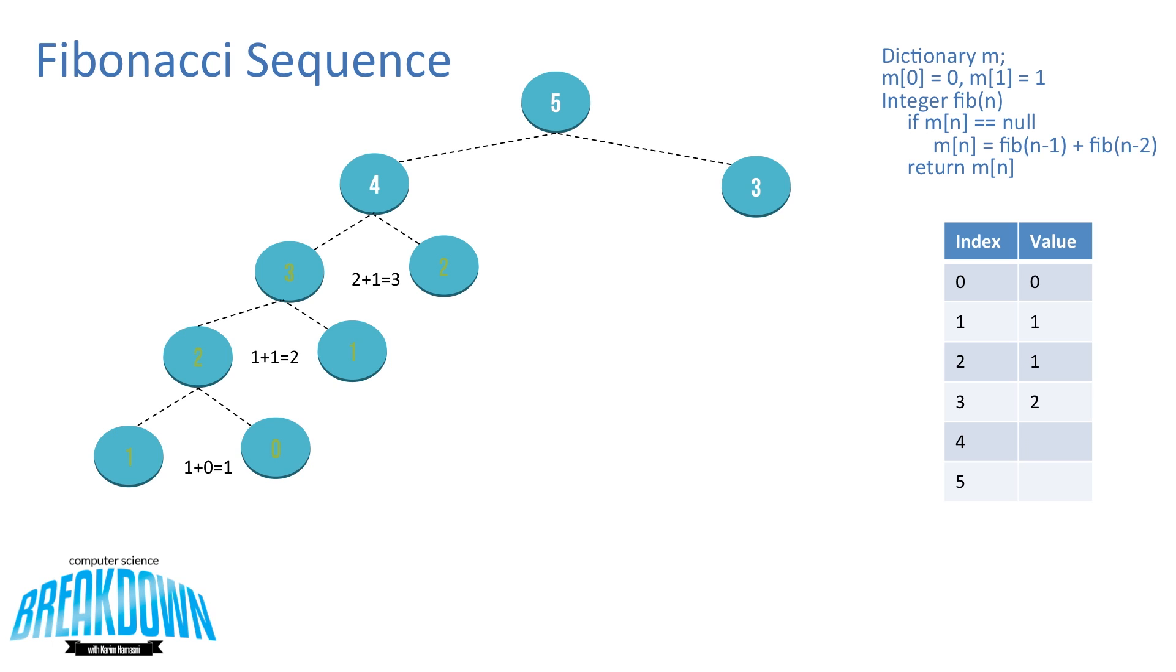Now armed with the values at index 3 and index 2, we can sum those and get the value at fib 4. Now with the table having values at 4 and 3, we can sum those up and get the values at index 5. And that solves our problem for fib 5.